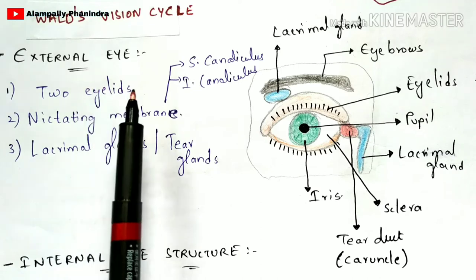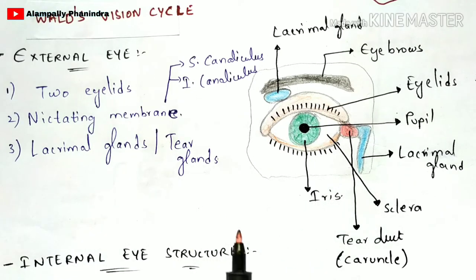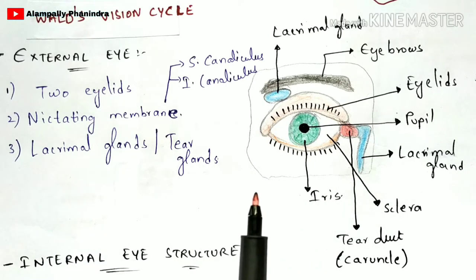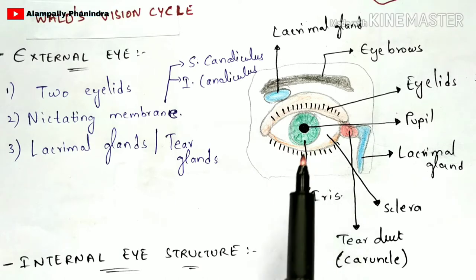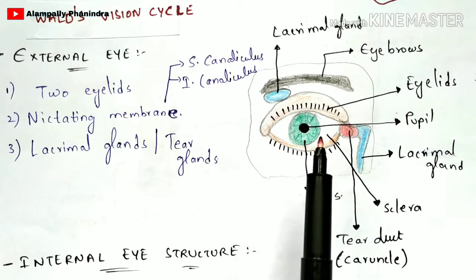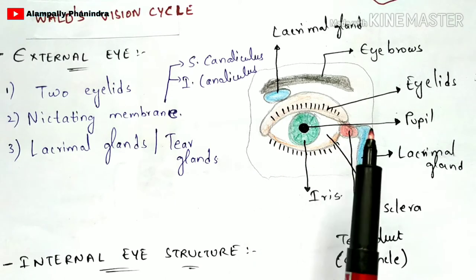There will be two eyelids. The major function of the eyelids is mainly to prevent the entry of dust particles into your eye — their main function is only for protection.